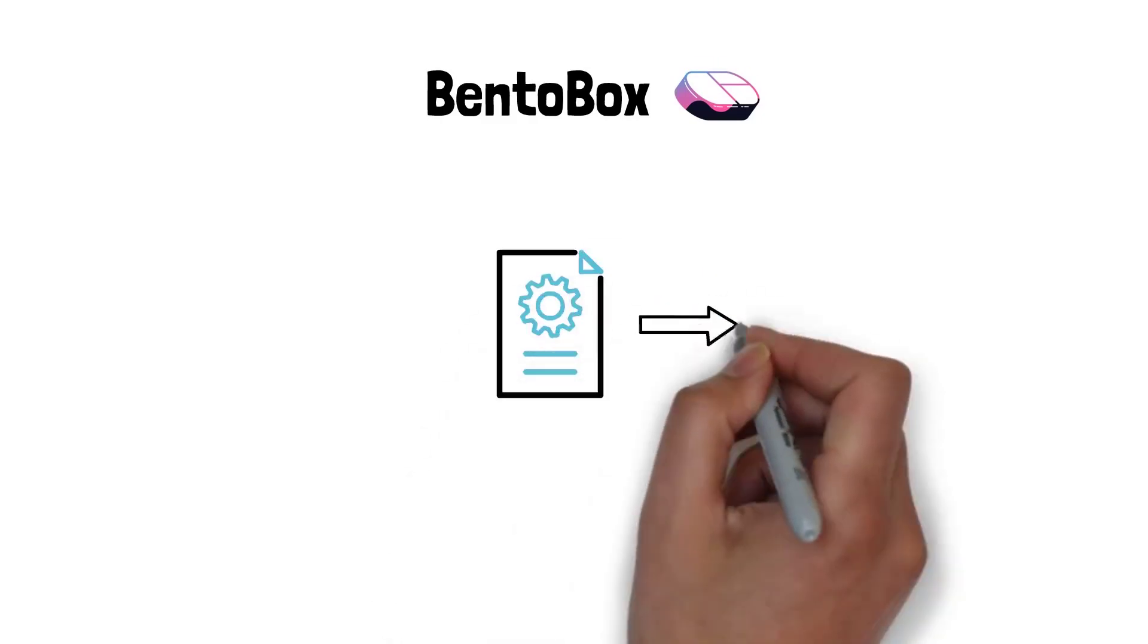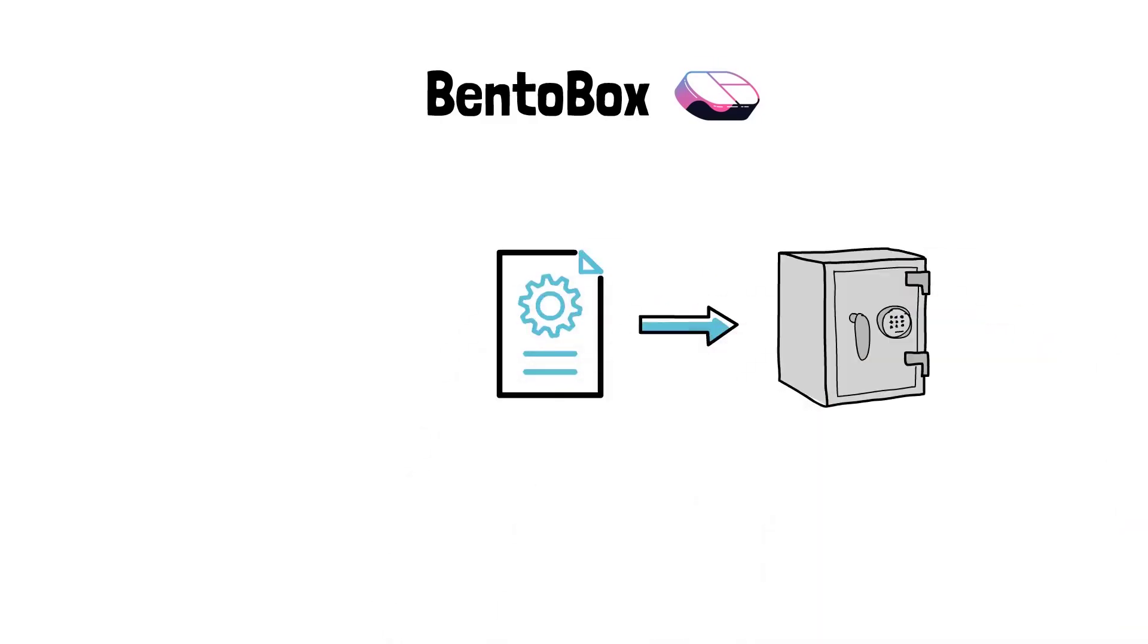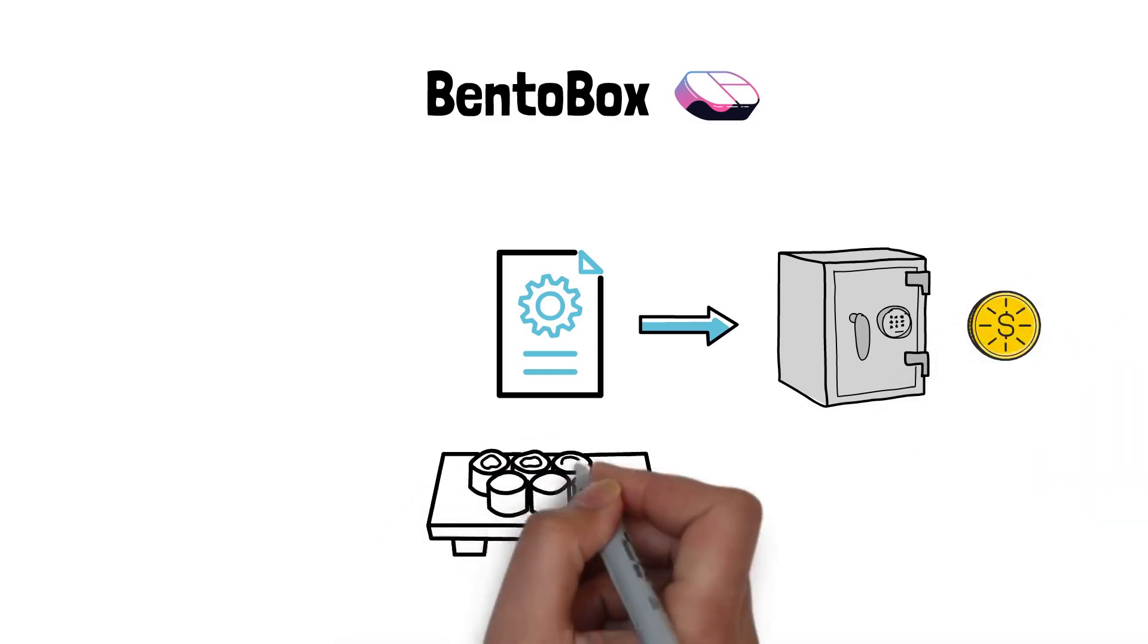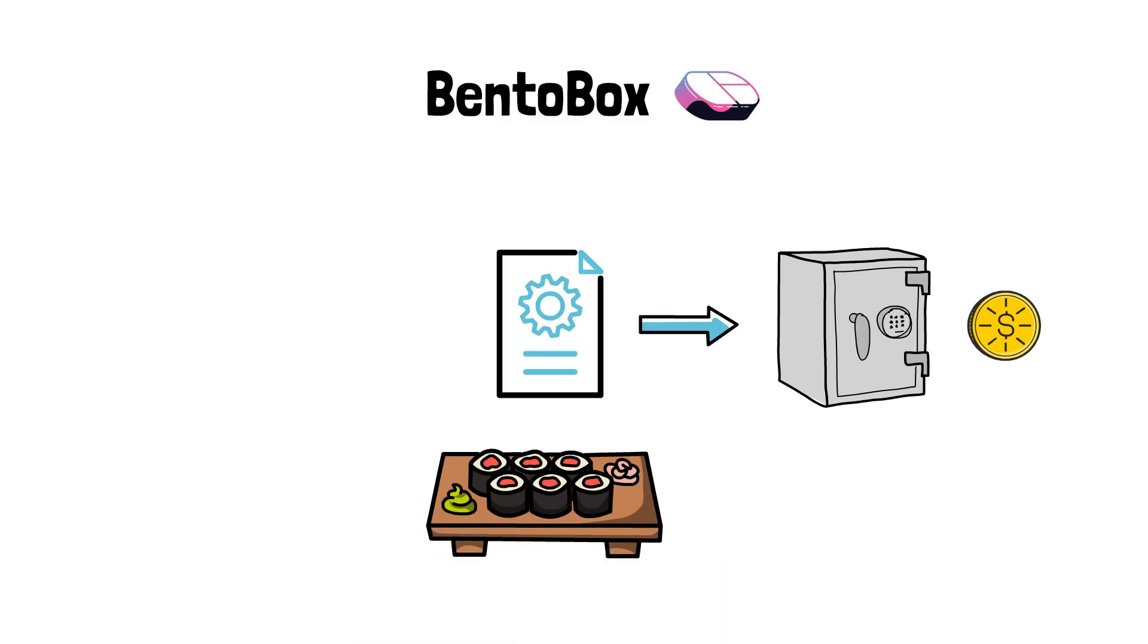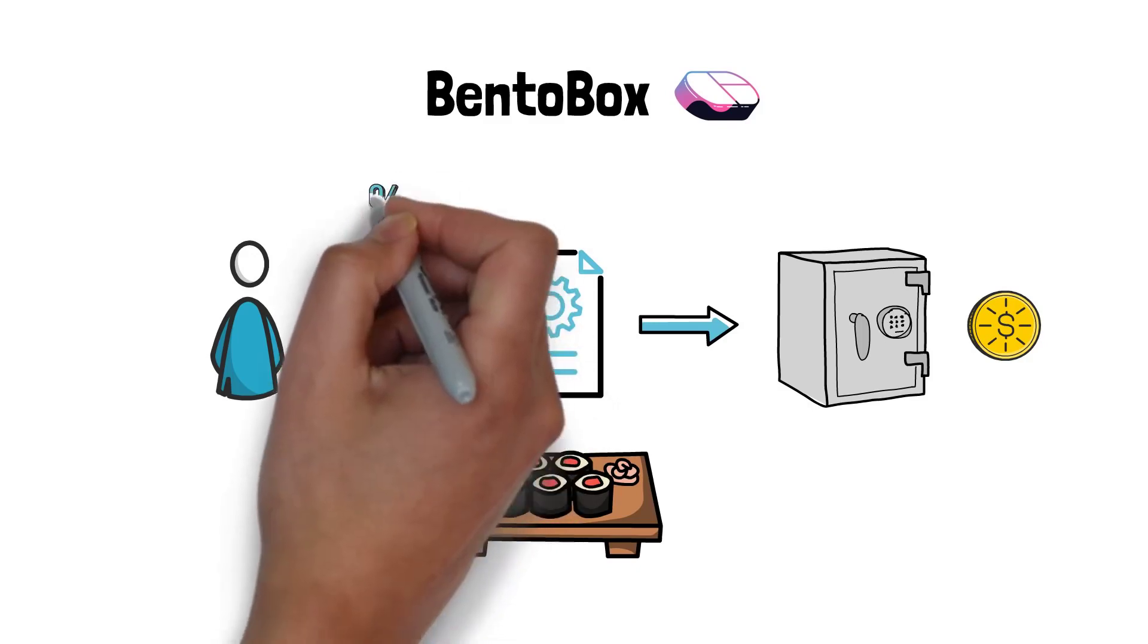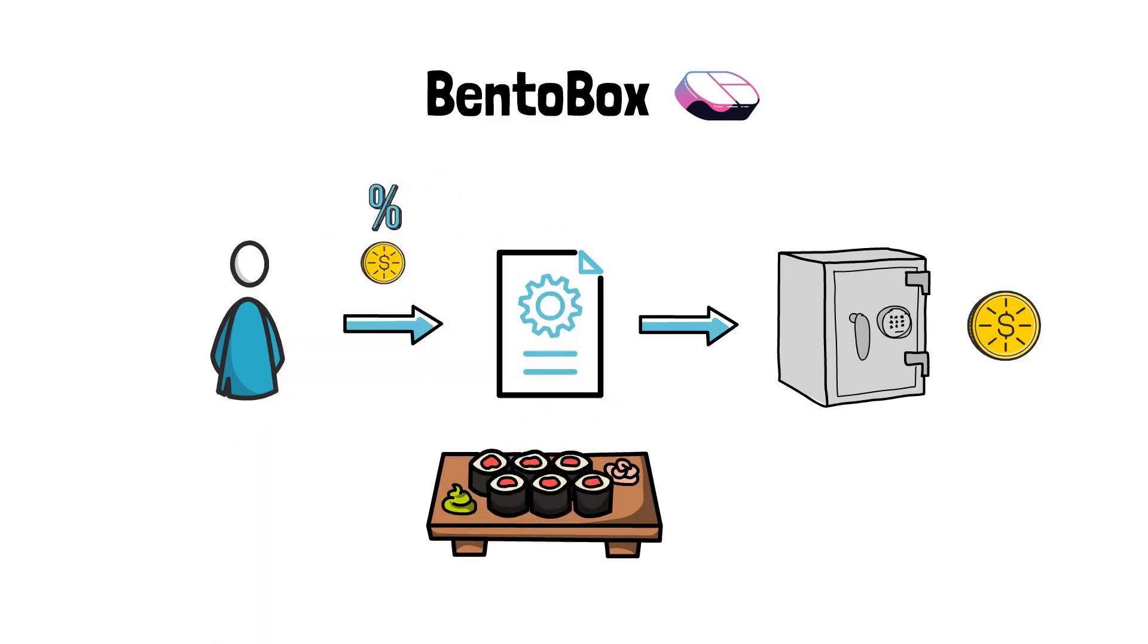BentoBox is a special smart contract that acts as a vault for certain tokens. This vault is basically a pool of funds that can be used by Bento-enabled applications in the Sushi ecosystem. Users who deposit funds into one of the BentoBox vaults benefit from earning extra yield on their tokens.